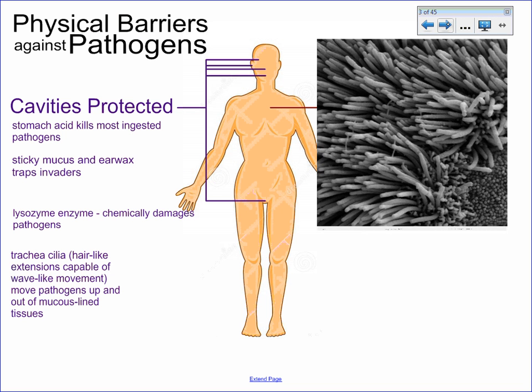The reason these aren't able to get into our bodies comes down to a few things. All our cavities are protected — first of all, the pH probably isn't favorable, like stomach acid kills pathogens if we ingest them. Other cavities like the ears, nose, and mouth have sticky mucus and earwax that trap invaders. There are also enzymes called lysozymes that come from our lysosomes and basically kill pathogens as well.